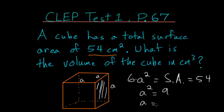And then taking a square root of each side we get A is equal to three. And to find the volume, the volume is just A times A times A or A cubed.